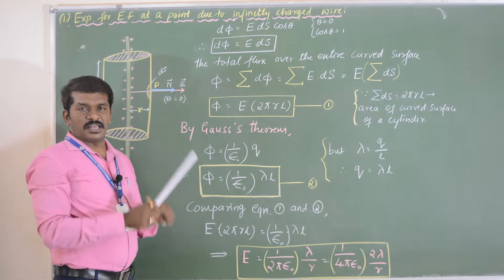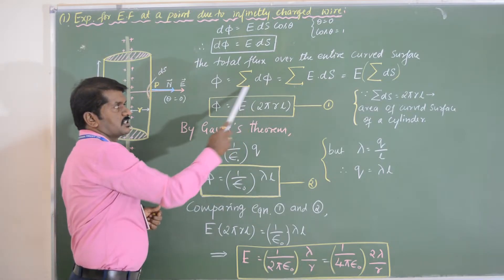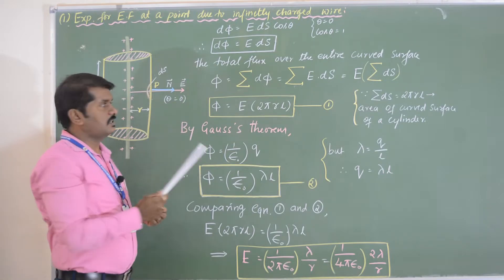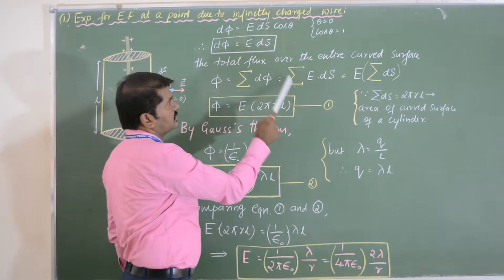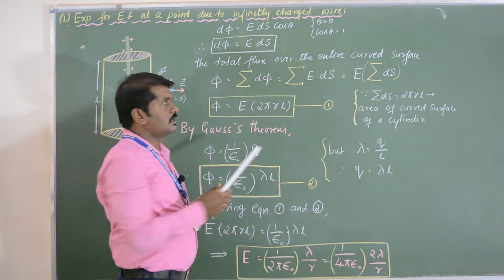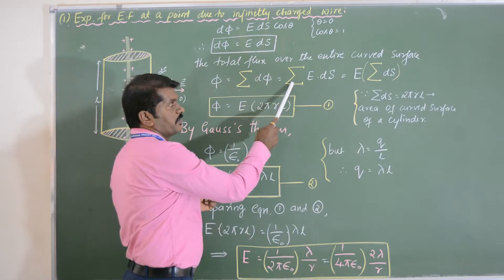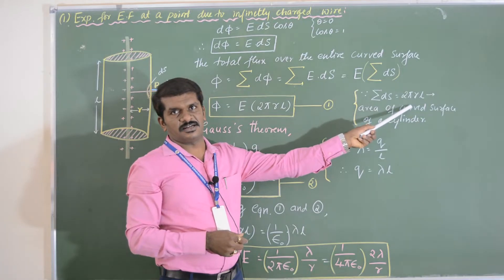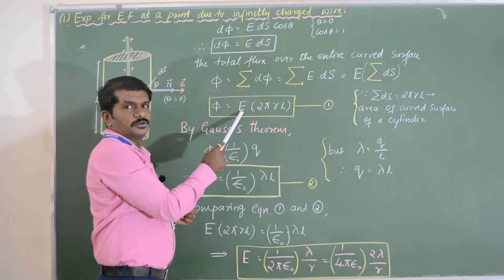The total flux over the entire curved surface is phi equals summation of d phi, which equals summation of E·ds. Since E is constant over the surface, this gives phi equals E times summation of ds. The summation of ds equals 2πrl, which is the curved surface area of the cylinder. Therefore, phi equals E into 2πrl — call this equation 1.